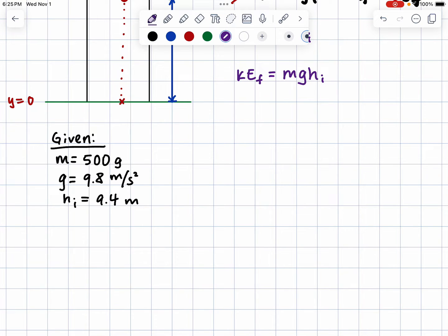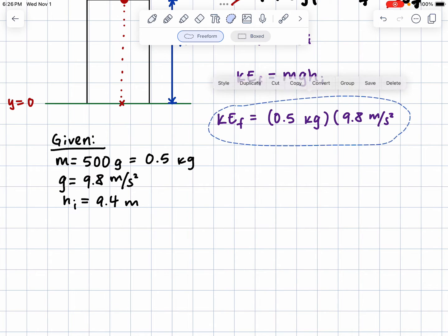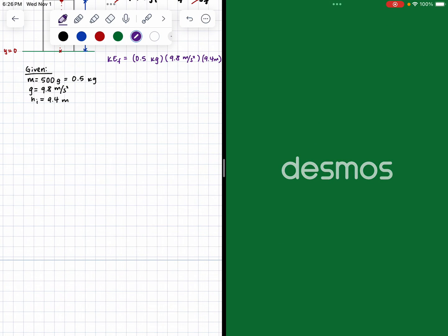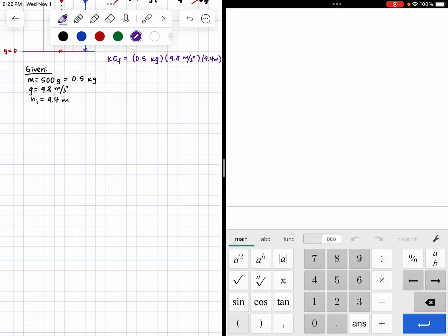Now we just have to plug in our numbers. The mass is 500 grams. That means I have to divide this by 1000. I want kilograms. Kilo is 1000. So this is 0.5 kilograms times 9.8 meters per second squared times 9.4 meters. So we have 0.5 times 9.8 times 9.4. So the kinetic energy of this ball is 46 joules.